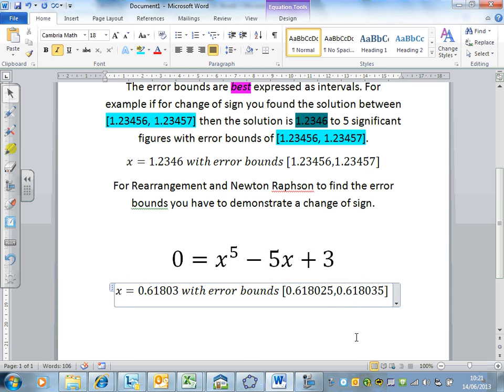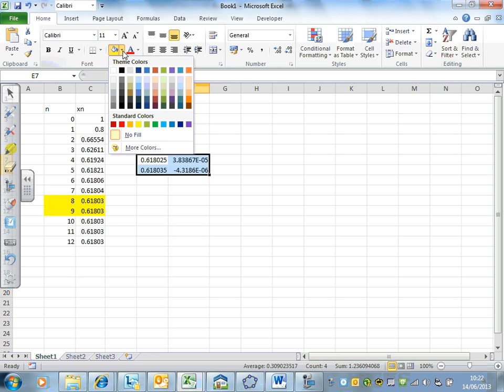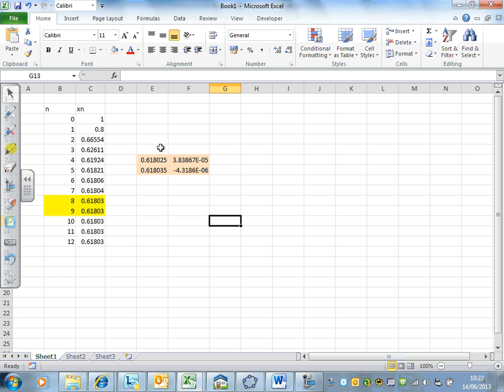We know the solution has to lie somewhere between there. To get full marks, you have to demonstrate that change of sign. I demonstrated the change of sign by typing in the values above and below our solution. You have to demonstrate a change of sign in order to get the error bounds, and I hope that makes sense.